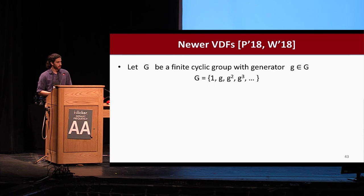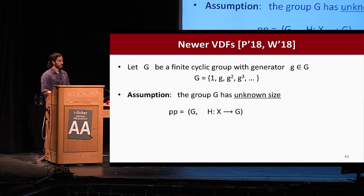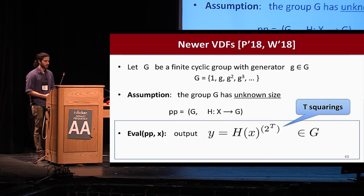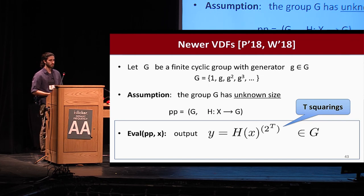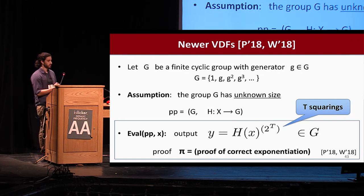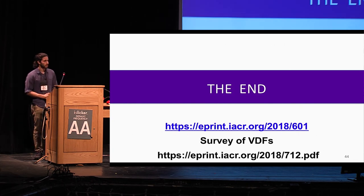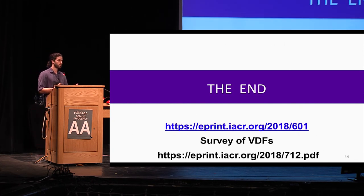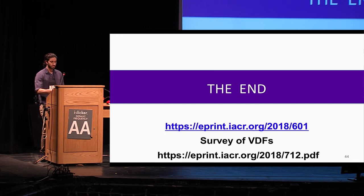Some newer VDFs that came out very recently essentially construct a specialized proof of correctness for exponentiation in a group of unknown order. The VDF eval algorithm hashes the challenge and raises it to 2^t — which requires t sequential squarings if the group order is unknown — and they produce an efficient proof of correct exponentiation that can also be verified efficiently. Our paper is on ePrint, and we also have a survey of various VDF constructions from 2018 on ePrint. Thank you very much.